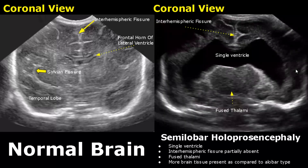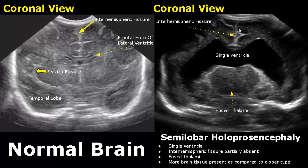Semilobar holoprosencephaly is less severe than the alobar type. A single ventricle is present and the thalami are also fused, but we do see an interhemispheric fissure — it is not complete but it is still present. More brain tissue is found as compared to the alobar type.